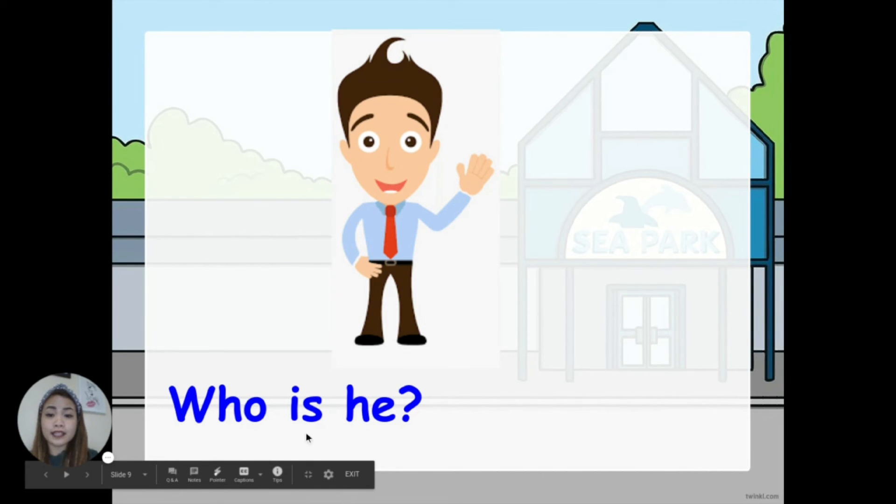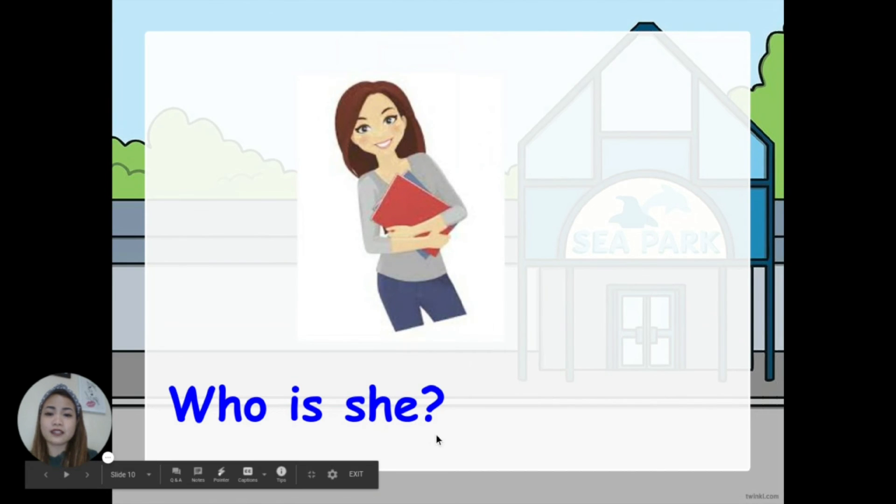What did she do? What did she do? Next. Who is he? Who is he? Perfect. Next one. Who is she? Who is she? Great.